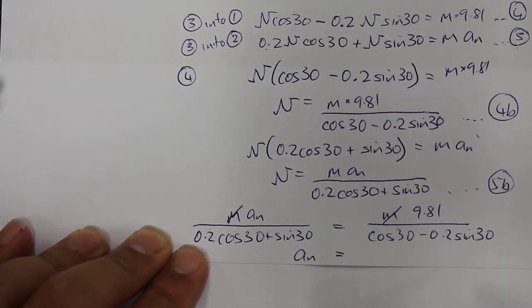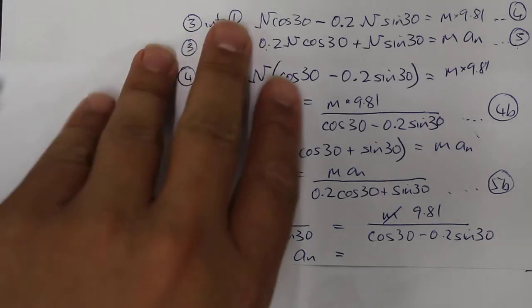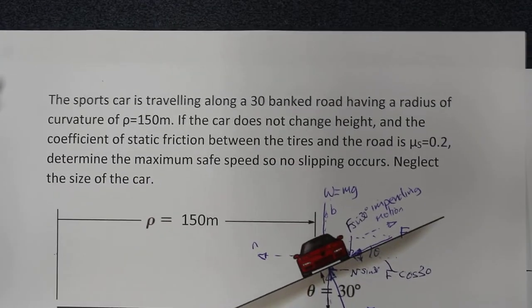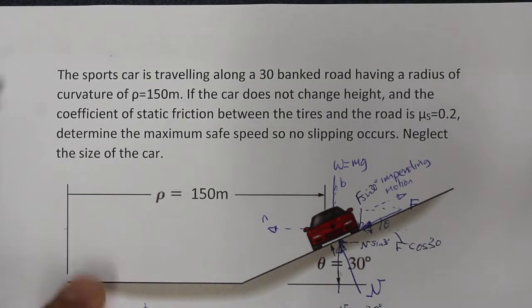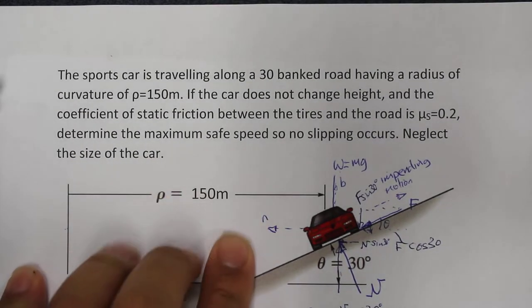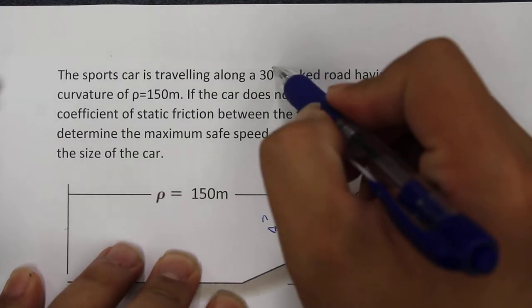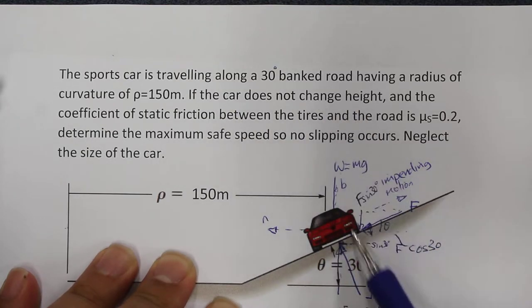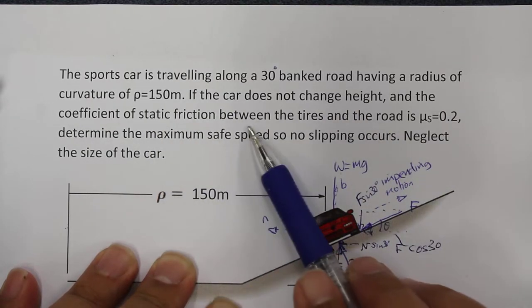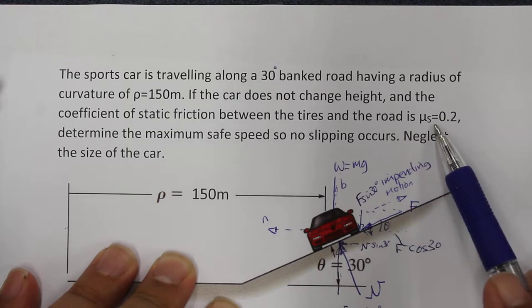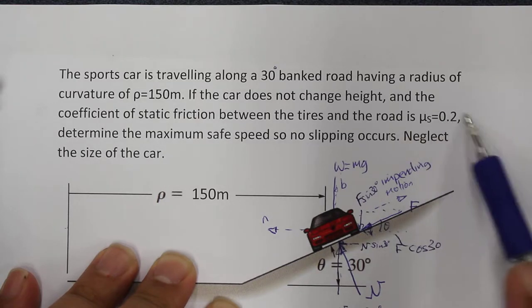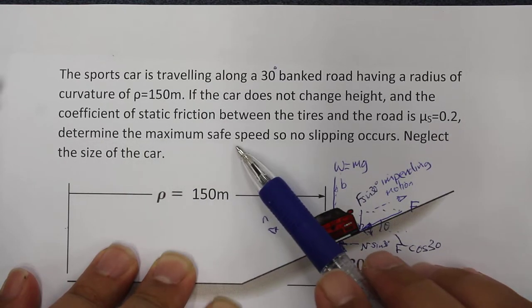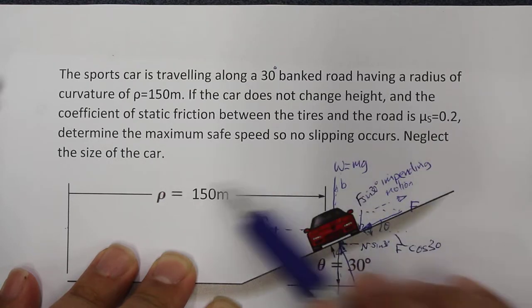This is the second part of a video looking at the following question where we are trying to find the motion of a car. The sports car is traveling around a 30 degree banked road having a radius of curvature of 150 meters. If the car does not change height and the coefficient of static friction between the tires and the road is μs equal to 0.2, determine the maximum safe speed so no slipping occurs.